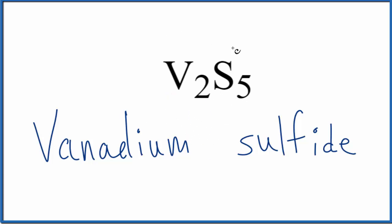So sulfur, that's going to be 2 minus. We have five of them, 5 times 2 minus. That gives us a 10 minus.